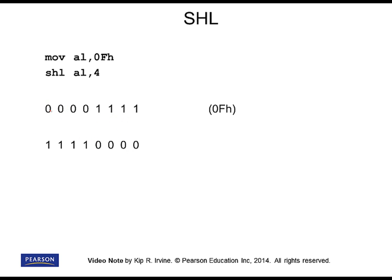Let's shift four bits. This actually has a practical purpose, because sometimes we want to take the lower half of an 8-bit number and move it into the upper half. In this original number — 0F hexadecimal — if we want to take that F and put it into the upper part of the result, we have to shift it four binary bits to the left. The four bits are moved into the higher half of the number, and four new zero bits are entered into the lower positions when the shift takes place.